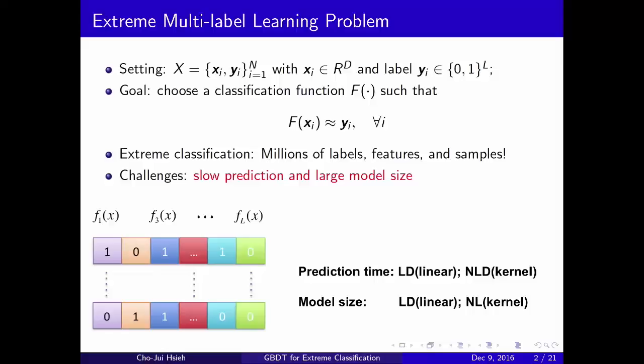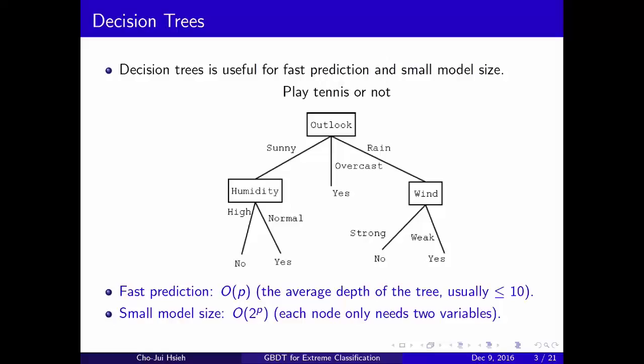The model, if you use a linear classifier, the prediction time is order L times d, where L is number of labels and d is the feature dimension. And the model size will also be L times d, which is very large. So in this work, we try to improve the prediction time and model size for extreme classification.